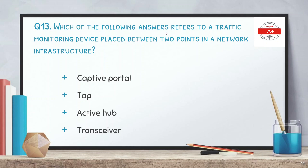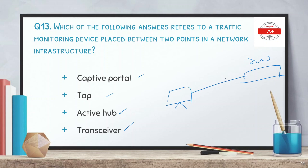Question 13: which of the following answers refers to a traffic monitoring device placed between two points in a network infrastructure? Options are captive portal, tap, active hub, and transceiver. The correct answer is tap. A tap works by being placed on the cable connecting a client device and a network switch; any traffic going in either direction is intercepted and can be analyzed using a network analyzer connected to the tap.